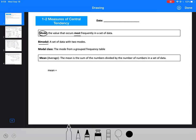You can have bimodal data, which is data with two modes, two most common numbers. And then you can have a modal class, which is the mode from a grouped frequency table that you'll see in later examples.